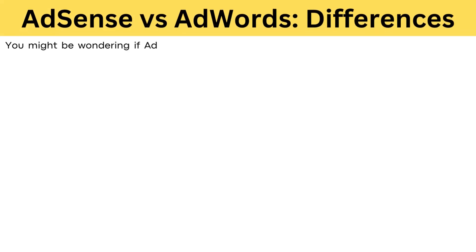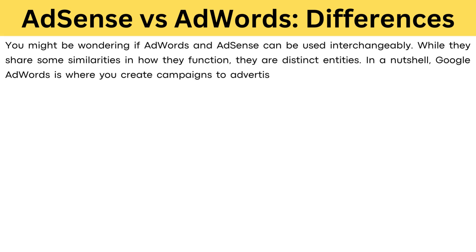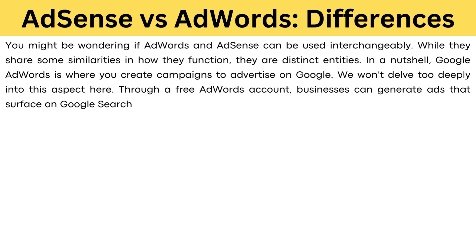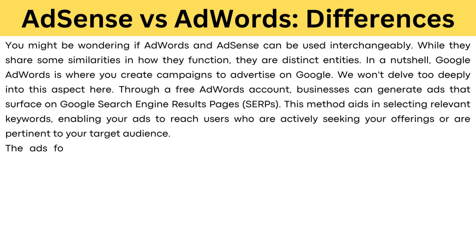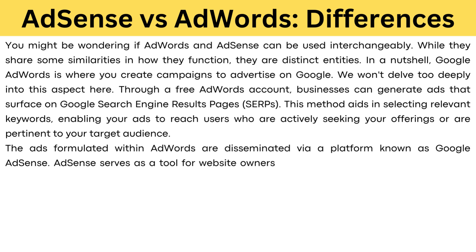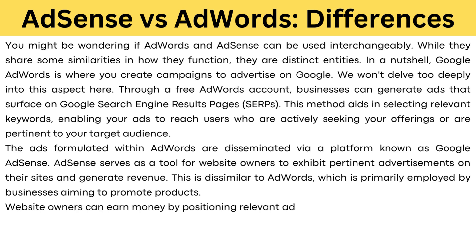You might wonder if AdWords and AdSense can be used interchangeably. While they share some similarities, they are distinct entities. Google AdWords is a way to create campaigns to advertise on Google — through a free AdWords account, businesses generate ads that can surface on Google Search Engine results pages, selecting keywords to reach users actively seeking their offerings. The ads formulated within AdWords are disseminated via Google AdSense, which is a tool for website owners to exhibit pertinent advertisements and generate revenue. Website owners can earn money by positioning relevant ads in front of their intended audience through AdSense.